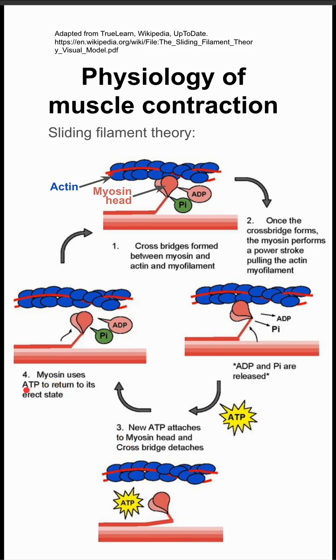The myosin head uses the ATP to return to its erect state — almost like a cocked state, ready for another power stroke. Once that ATP is used up, it's then ADP and a phosphate group again, and you're able to start that cycle all over again.